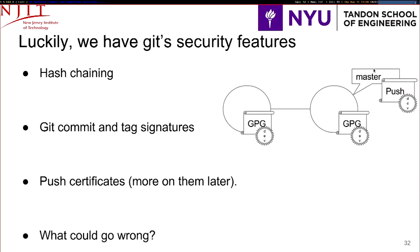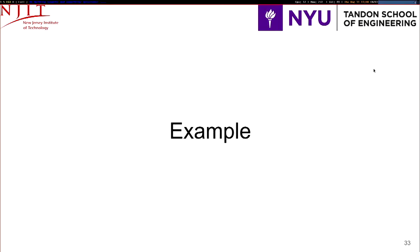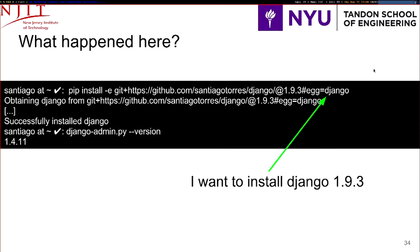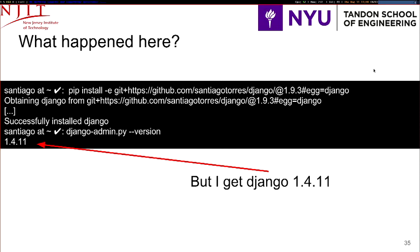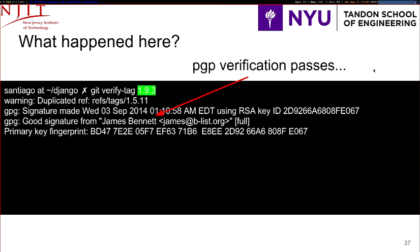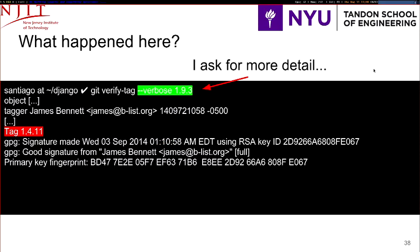However, things can go wrong. I was trying to install Django 1.9.3 in my own modified GitHub repository, and for some reason I ended up with Django 1.4.11. Interestingly, if you try to verify the tag, the GPG verification passes, so everything should be fine — I'm actually running code that's valid code. But if I ask for a little bit more detail, I realize that I'm actually getting the wrong tag — I'm getting 1.4.11.